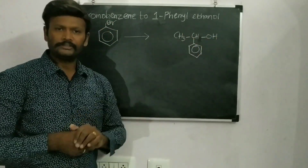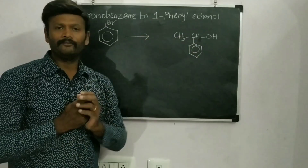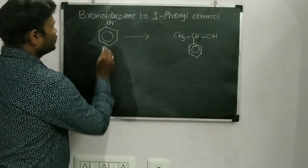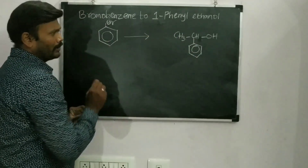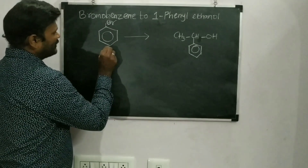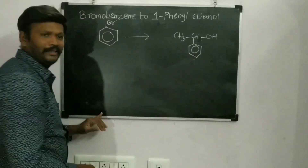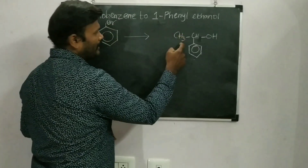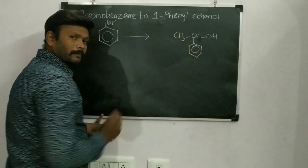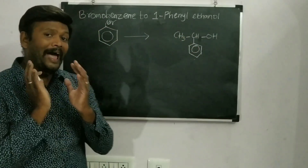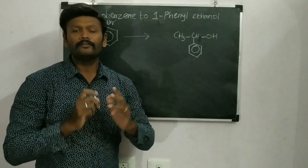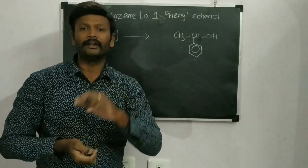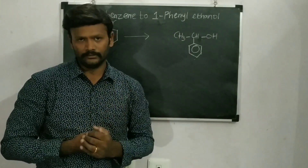That is what I need to convert from bromobenzene to 1-phenyl ethanol. Here, benzene ring is there in bromobenzene; here also benzene ring is there in the product. But I need to add a two-carbon-containing alcohol. So I have to convert by adding two carbons containing alcohol.